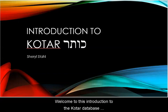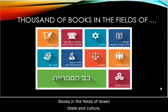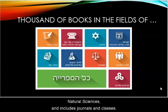Welcome to this introduction to the Kotar Database, provided to you by the HUC-JIR Library System. The Kotar Database contains thousands of current Hebrew books in the fields of Israeli state and culture, Judaism, Contemporary History of Israel and Judaism, Humanities, Social Science, Law, and Natural Sciences, and includes journals and classes.